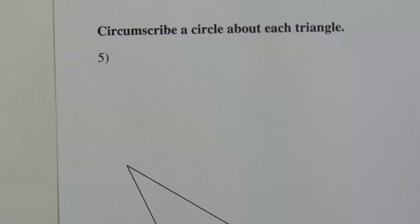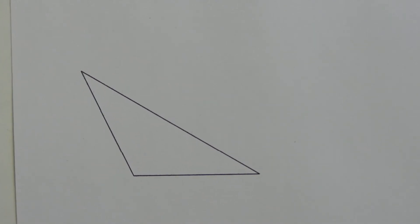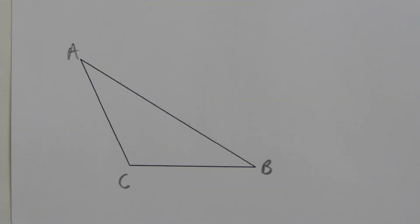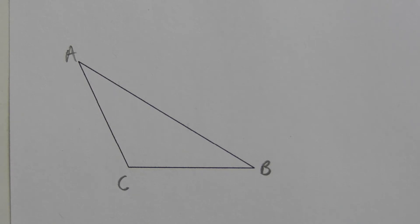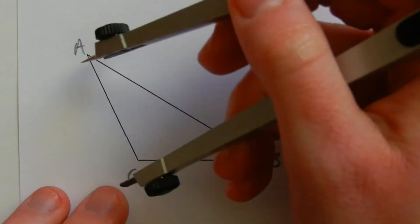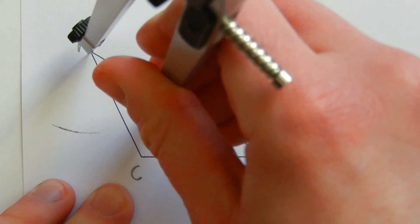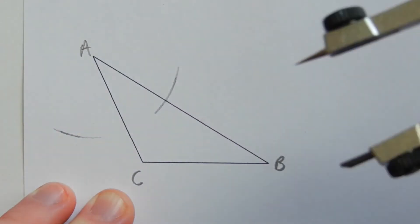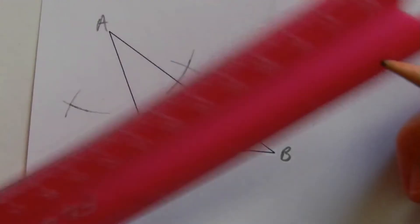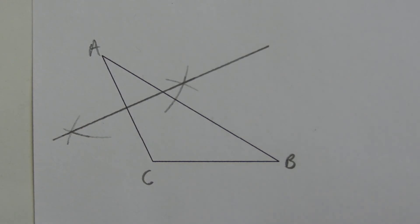In number five, the directions say to circumscribe a circle about each triangle. Let's name this triangle ABC. Once I find the circumcenter, I can use it to circumscribe a circle. So let's find the perpendicular bisector of AC — making my compass a little more than halfway, a mark to the left of that line from point A, and the same from point C, keeping the same measurement. I'll form my intersections and draw the perpendicular bisector.